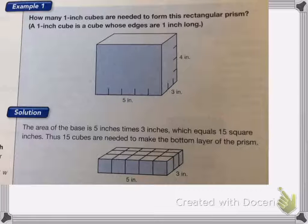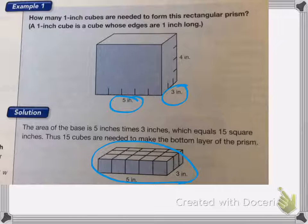So here at the bottom we show what the first row would look like. If I did the base, which is five inches and three inches, I would get 15 square inches. Thus it takes 15 cubes to make my bottom. So I know it takes 15 cubes to make the bottom of this prism.